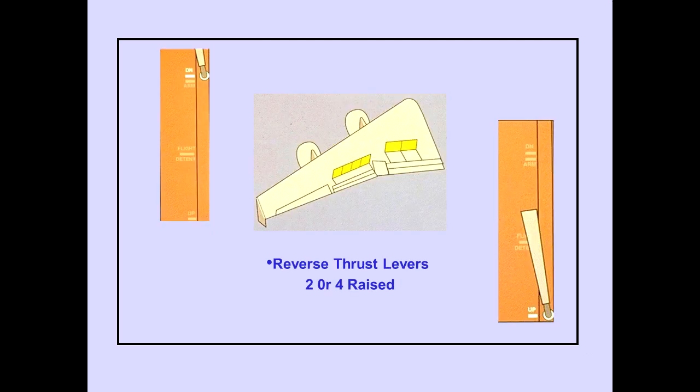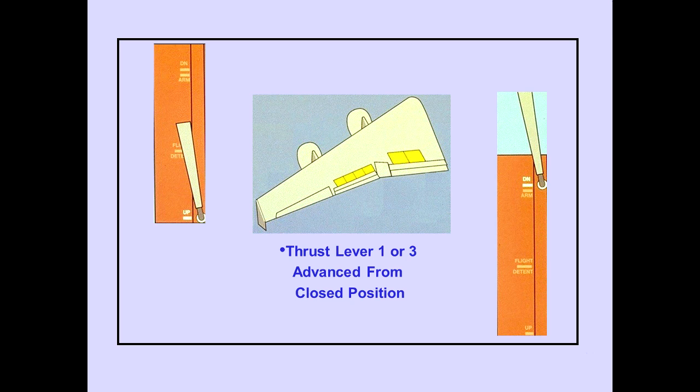On the ground, with the speed brake lever in the down position, all spoiler panels automatically move to the up position when reverse thrust lever two or four is raised to the idle detent. The speed brake lever automatically moves to the up position. On the ground, with the speed brake lever in the up position, all spoiler panels automatically move to the down position when thrust lever one or three is advanced from the closed position. The speed brake lever automatically moves to the down position.